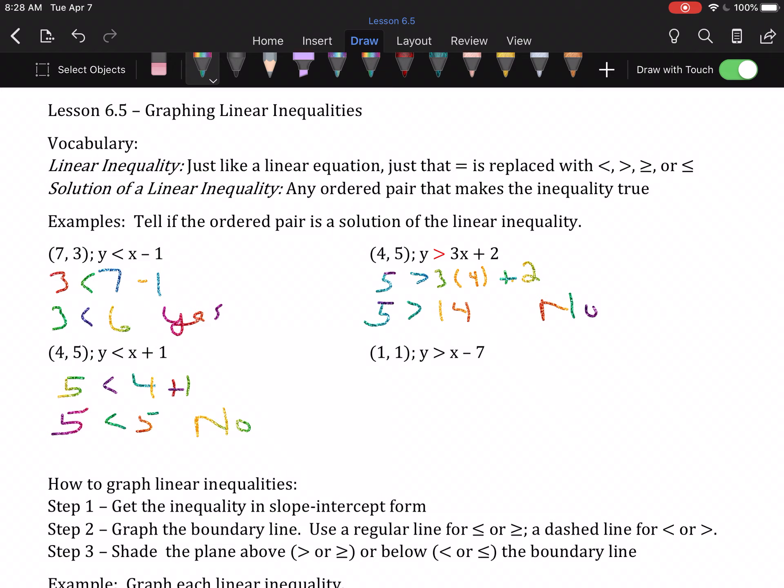Over here, we're going to put 1 in for both x and y. So is 1 greater than 1 minus 7? Well, 1 minus 7 is negative 6. And a positive number is always greater than a negative number. So yes, that ordered pair works there.